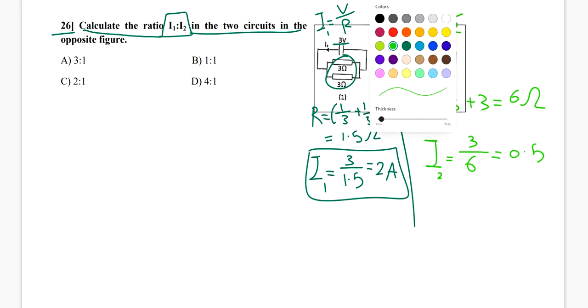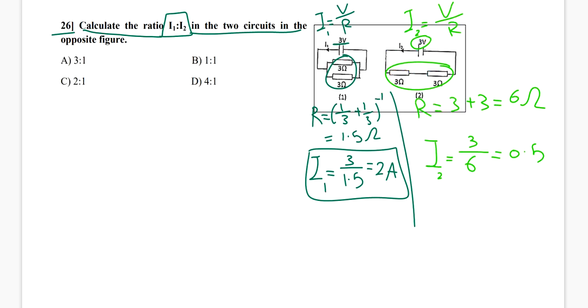Now, let's find the ratio I1 by I2. So I1 by I2, it's like I1 over I2, which is going to be 2 by 0.5, which is 4 by 1.